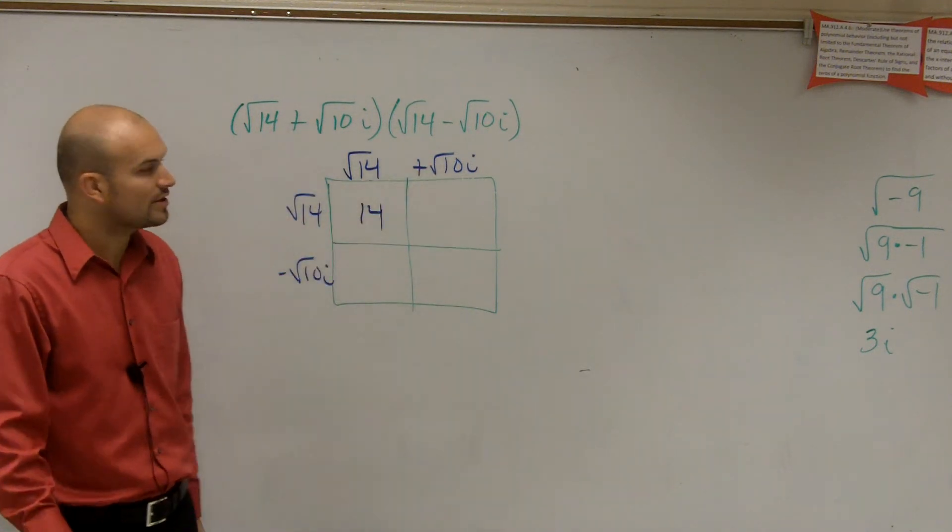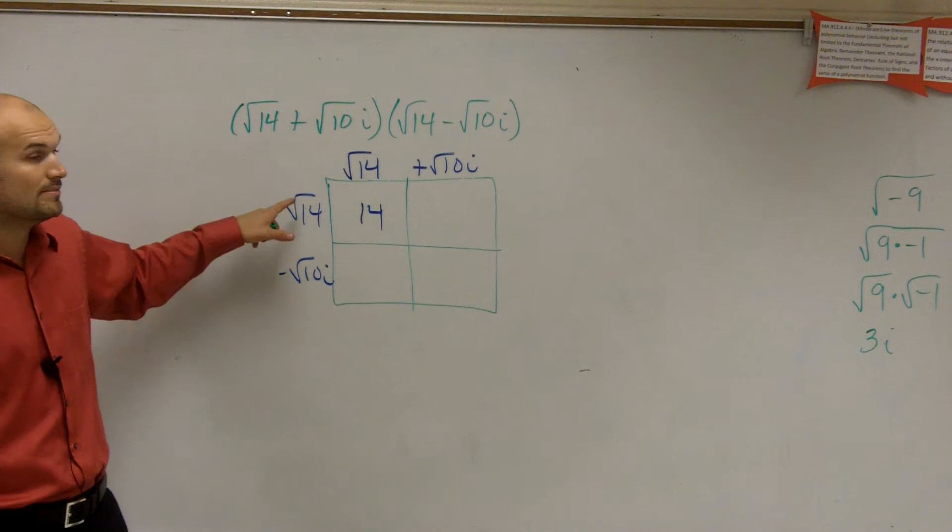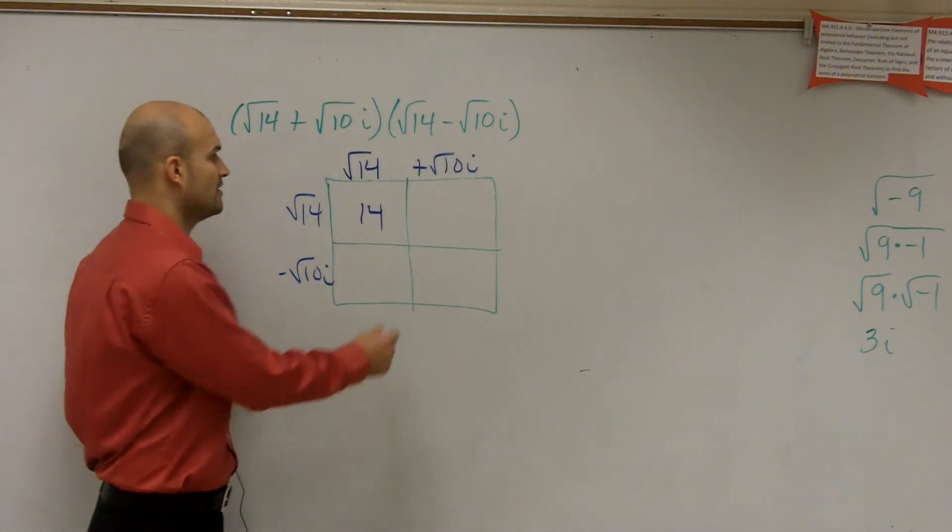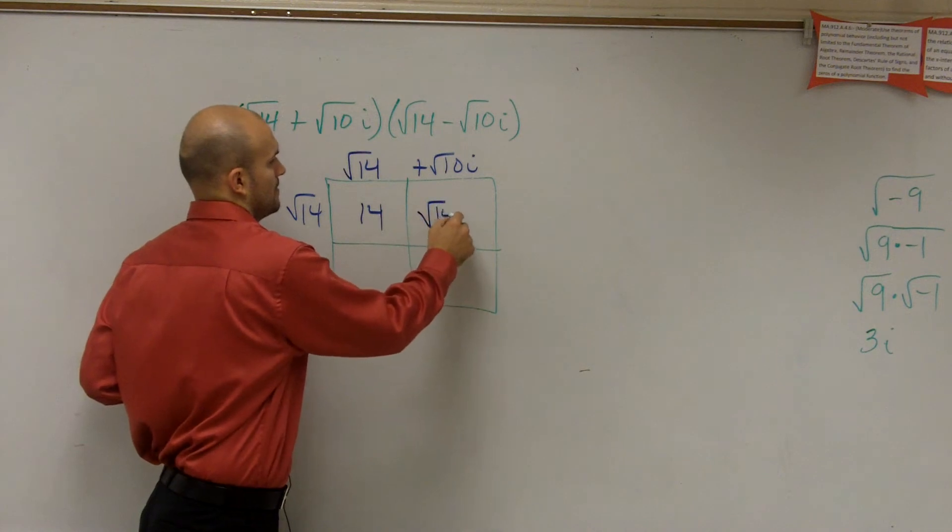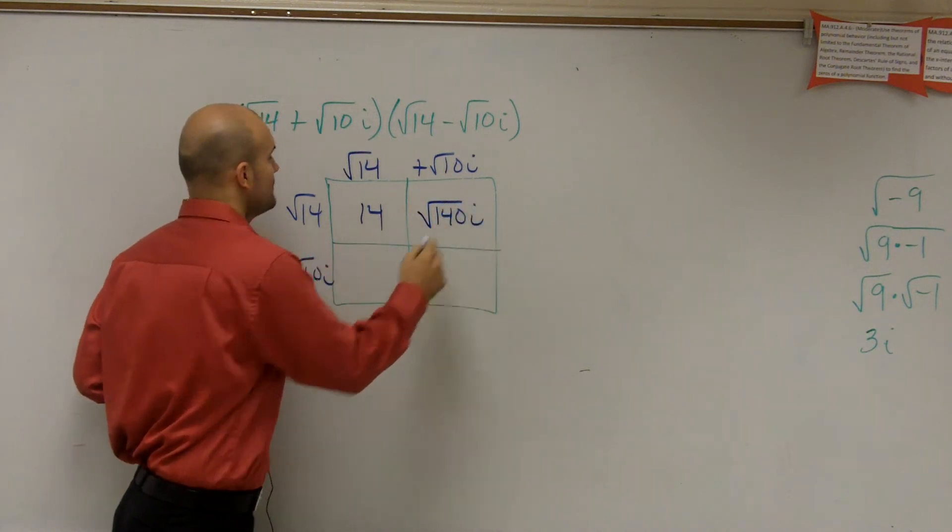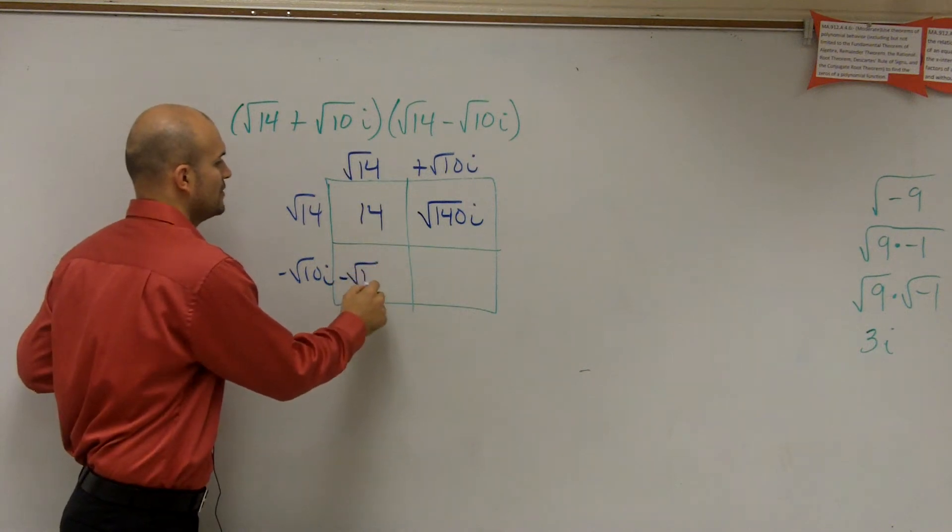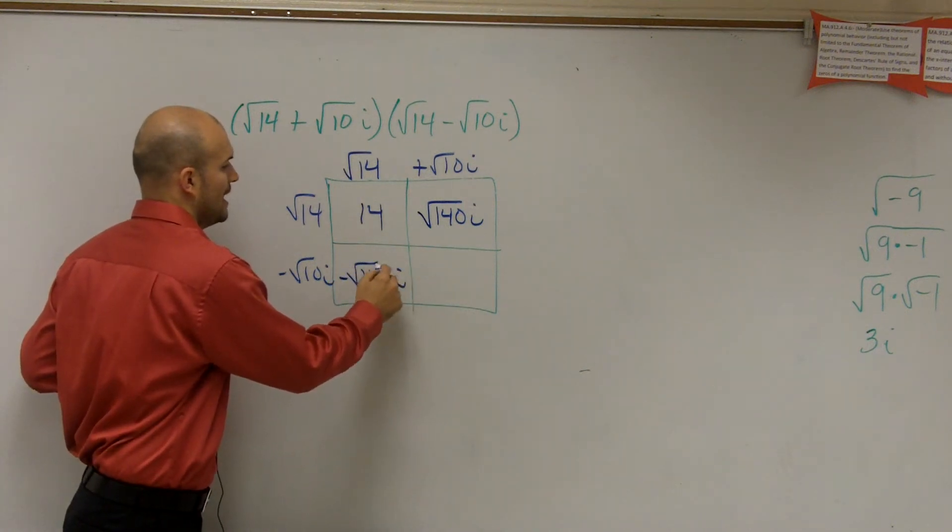Square root of 14 times the square root of 10. You can multiply radicals, you can multiply their numbers inside of this, so that's going to be the square root of 140i. Here, you're going to have the same thing. It's going to be the negative square root of 140i.